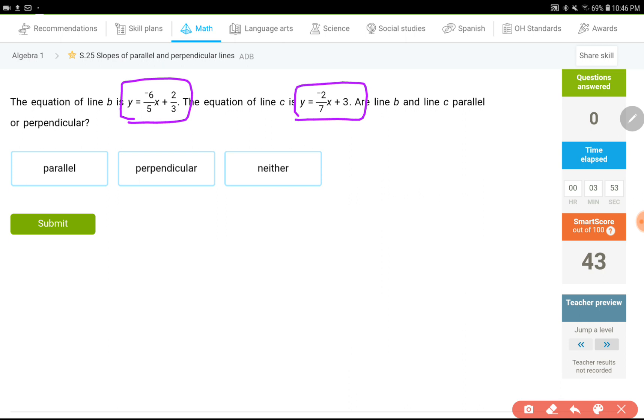Our question is about whether these two lines are parallel or perpendicular. If they are parallel, their slopes are the same. If they are perpendicular, they are negative reciprocal. The slope of the first line is negative 6 over 5, because this is y equals mx plus b. The number in front of x is the slope, which is negative 6 over 5. The slope of the second line is negative 2 over 7.